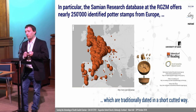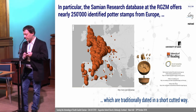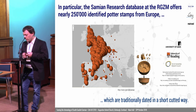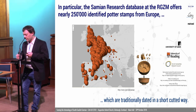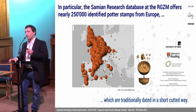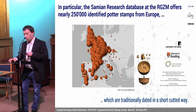Let's have a look at a small database — maybe you know it. The Samian Research Database at the ACSM, with a lot of British partners, offers more than 250,000 identified pot stems from all over Europe, and they are normally traditionally dated in some kind of shortcut way.